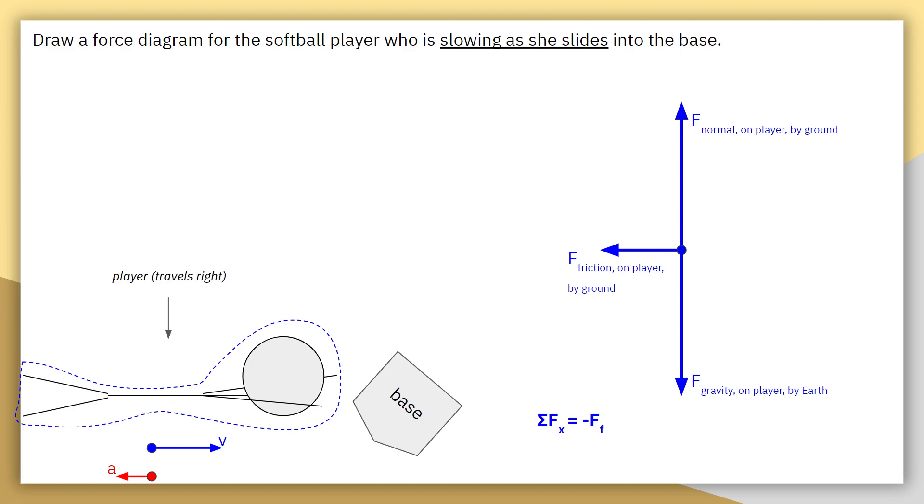The sum of the forces on the x-axis is just going to be the force of friction. The reason why I'm making this negative is, by default, I typically say that if the object is moving, the direction of travel is the positive direction, and then the direction opposite of travel is the negative. Because the player is traveling to the right and the friction force is pointing to the left, that's why I'm specifying it's a negative force of friction.